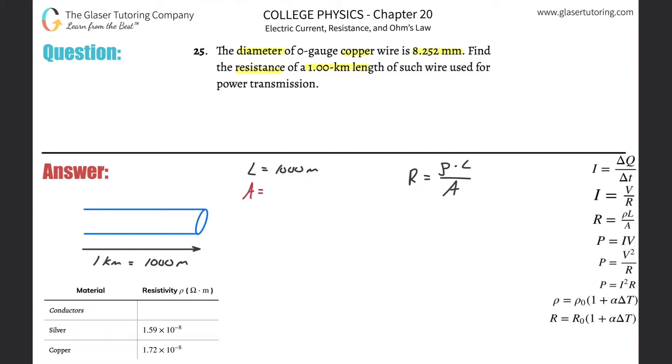So that's why I know I need area. Now basically if they tell me the diameter, I can find the radius. So how do we do that? Well, if you know the diameter is 8.252, just divide it by 2 to find the radius. But remember this is in millimeters, so we need that in meters. So just take that and multiply it by 10 to the minus 3. Now this is what the radius will be.